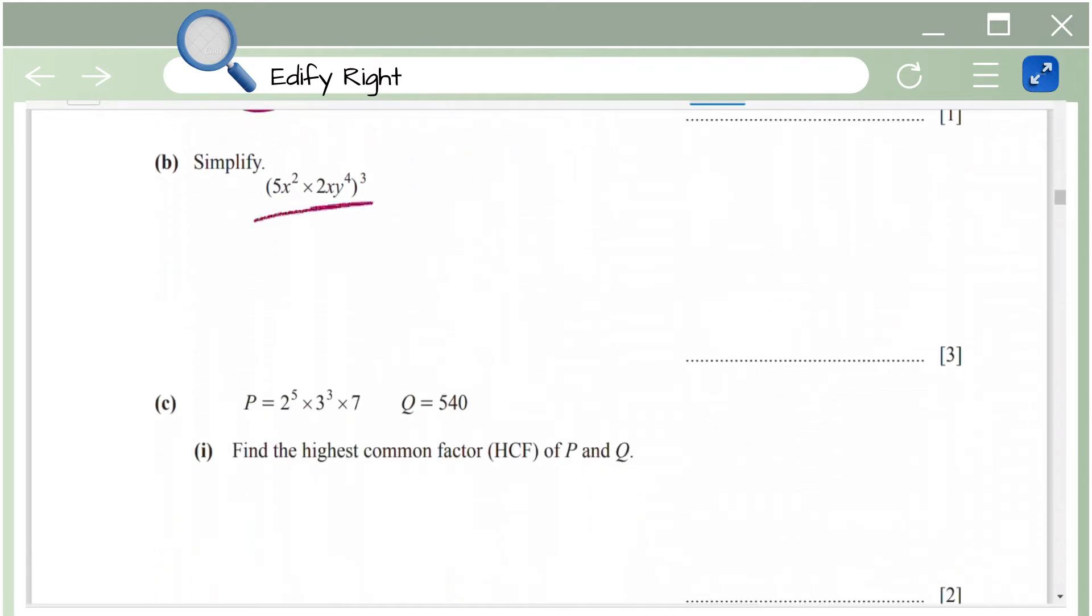Next we have simplify 5x square into 2xy power 4 whole power 3. So here we are just going to simplify within the bracket first and then we'll open the bracket. So within the bracket you have two numbers here 5 and 2 and you have a multiplication sign in between. So that's basically going to be 10 and then you have x square into x which is x cube and then you have a single y power 4 whole power 3. Now just open the bracket.